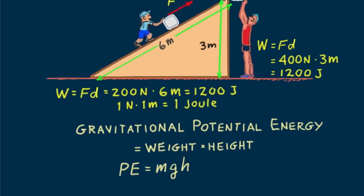When energy does work, it transforms to energy of some other form. For example, if the ice slides back down the ramp or falls off the edge, its potential energy will transform to energy of motion. We'll cover energy of motion in our next screencast.